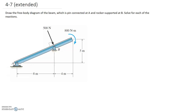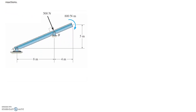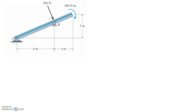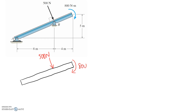We're asked to draw the free body diagram of the beam which is pin connected at A and rocker supported at B. Secondly, we need to solve for each of the reactions. To start, let's draw the diagram by taking out just the beam part. We carry first the applied forces, so we have this 500 newtons and on the end we have the 800 newton meters, and we need to replace the pin and the roller with the equivalent reactions.